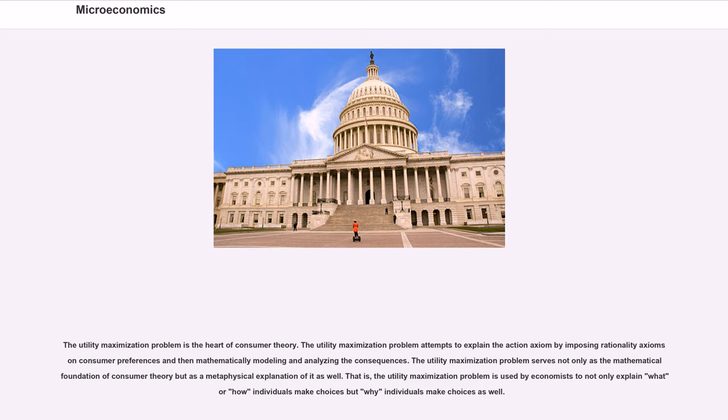The utility maximization problem is the heart of consumer theory. It attempts to explain the action axiom by imposing rationality axioms on consumer preferences and then mathematically modeling and analyzing the consequences. The utility maximization problem is used by economists to not only explain what or how individuals make choices but why individuals make choices as well.